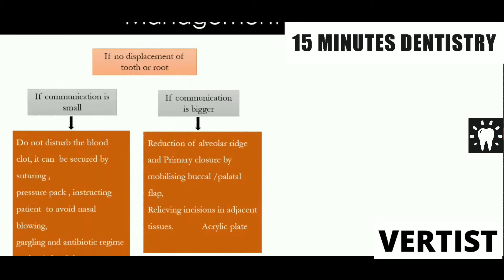If the communication is bigger, you smoothen the edges, reduce the alveolar height so that while suturing you don't close the oro-antral communication under tension. You take a buccal or palatal flap, mobilize it nicely, and suture without any tension — there must be no tension on the suture line. You can support the suture line with a good acrylic plate fabricated by taking the patient's impression.